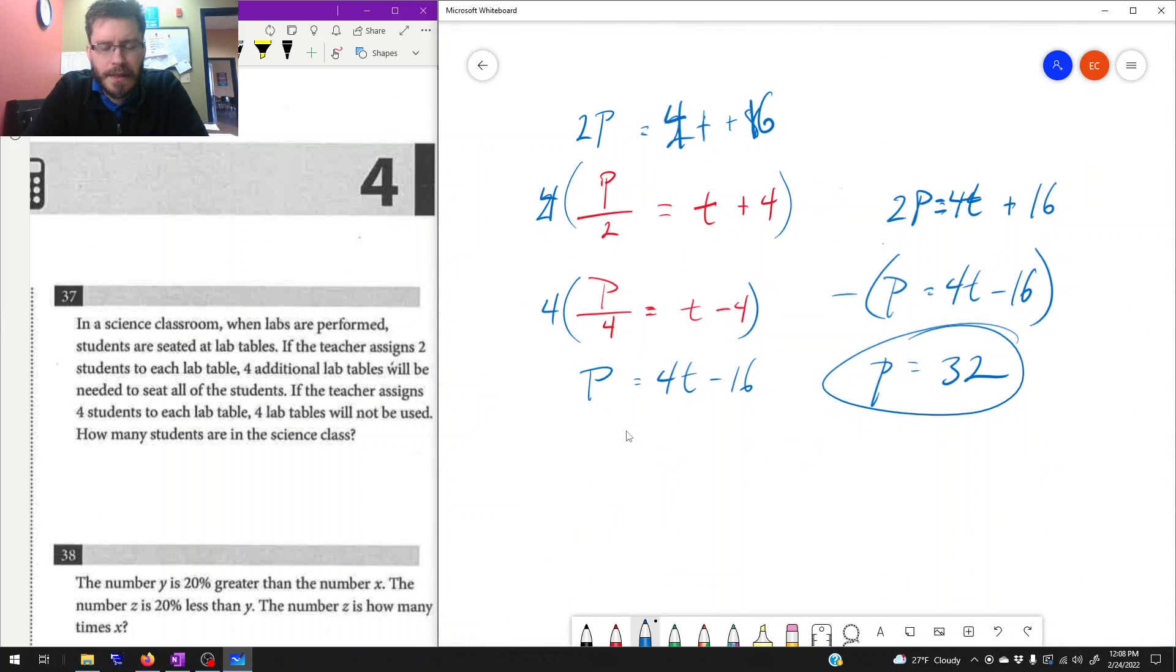So that is how we do a fairly tricky system of equations. Remember that you have to name the variables. Here I used population P and t for the tables. We had to recognize that we're splitting that population into groups of two and into groups of four. And if we split it into groups of two, that'll be equal to the number of tables in the classroom plus four. It says we will need four additional tables. And if we split it into groups of four, we will have four tables that are not used. So that's where we have the four excess tables. That's why we have four minus, or t minus four.